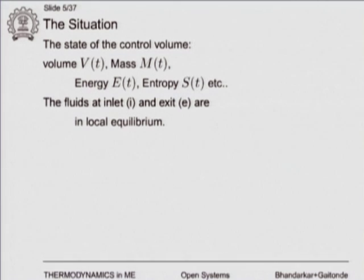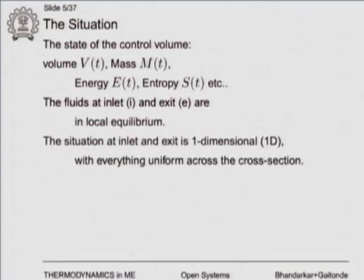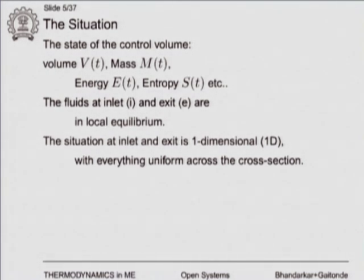The fluids at the inlet and exit are assumed to be in local equilibrium, meaning they have well-defined properties — temperature, energy, entropy. We assume the flow is one-dimensional and uniform across a cross-section. If there are multiple inlets and outlets, each can be modeled as 1D, which suits our purpose.